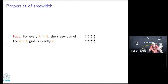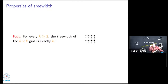So our first idea — that a large treewidth always implies a large clique — is not correct. But surprisingly, the second example is: if a graph has large treewidth, then there should be a large grid in this graph. To formulate this more precisely, I need the notion of what it means for a large grid to 'live inside' a graph, which requires the definition of a graph minor.